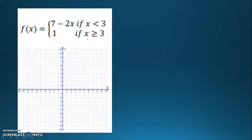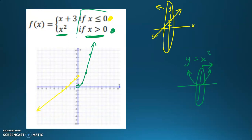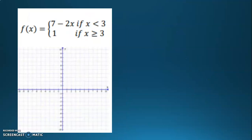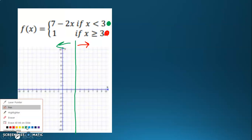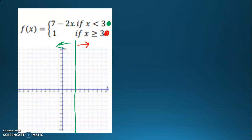All right, let's take a look at another one. This time, the break is at three rather than at zero. So whatever number you're breaking at, you're going to think about how you're going to have two different functions on either side of that x value. I'm going to be breaking my function at three. The two different functions are a linear function, 7 minus 2x, and a constant function of 1. I'm going to think about what each of them looks like for the entire graph and then only graph one piece of it.